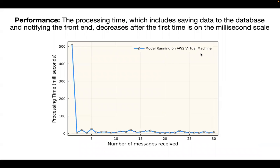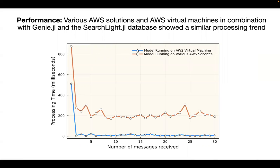To evaluate the performance of our system, we measure the processing time when we receive a message. The processing time includes saving the data to the database and also notifying the front-end. We can see from the graph that it decreased after the first time, on the millisecond scale. Comparing the performance of those two services, the model running on the AWS virtual machine has superior performance than the other one, and both show a similar processing trend.